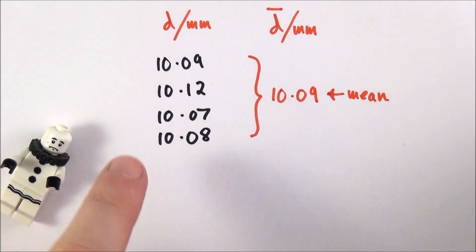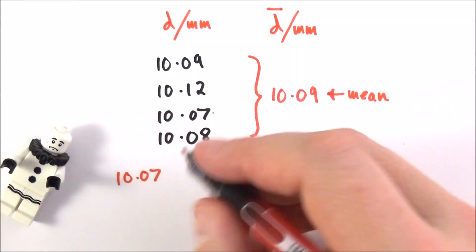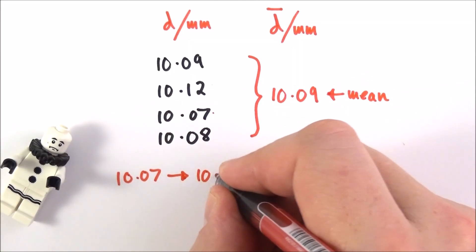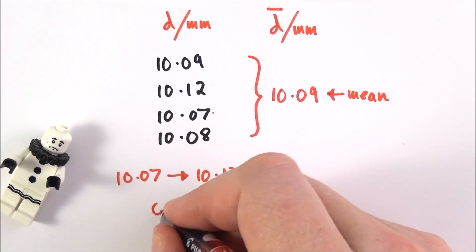Now something else I can also look at here is the range of my values. Now my values start at the smallest one, which is 10.07, and the biggest one is 10.12.